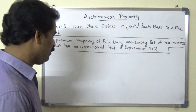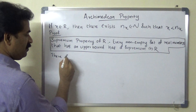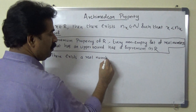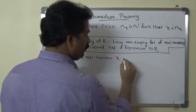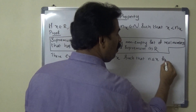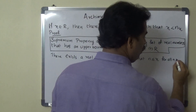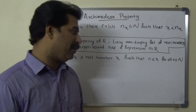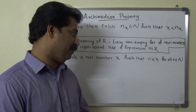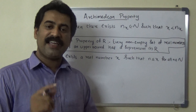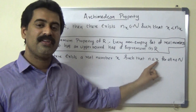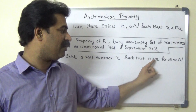If possible, let there exist a real number x such that n is less than or equal to x for all n belonging to capital N. That means every natural number is less than or equal to small x. This is our assumption.